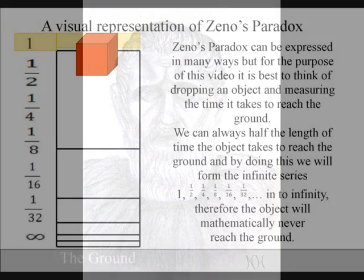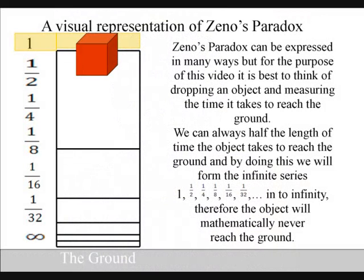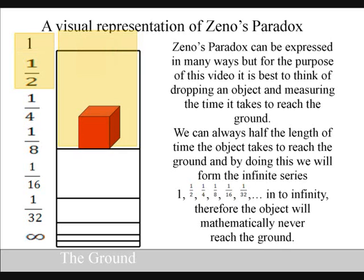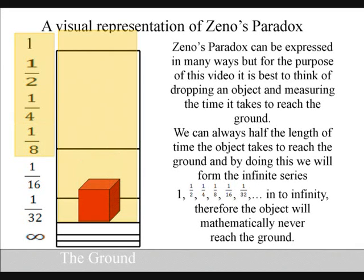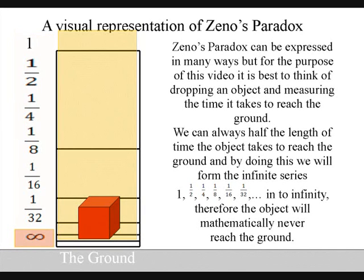Zeno's paradoxes can be expressed in many ways, but for the purpose of this video it is best to think of dropping an object and measuring the time the object takes to reach the ground. We can always have the length of time the object takes to reach the ground, and by doing this we will form a never-ending infinite series. Therefore, mathematically the object should never reach the ground.